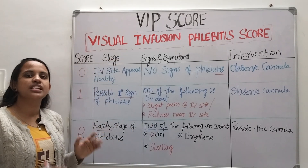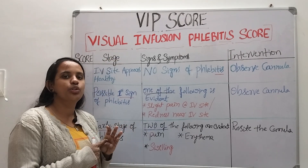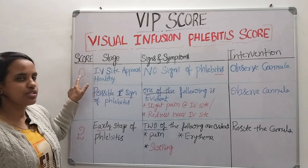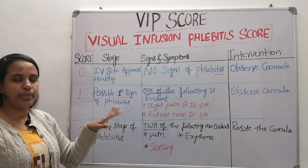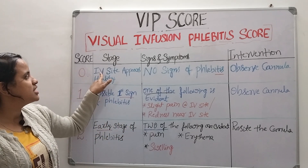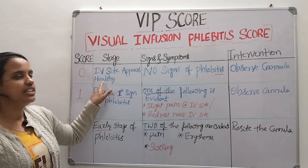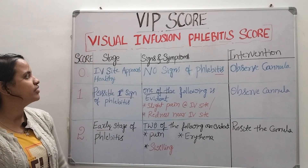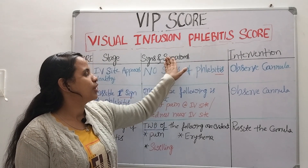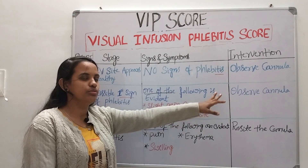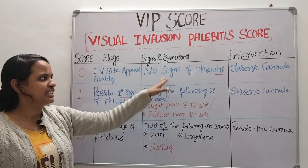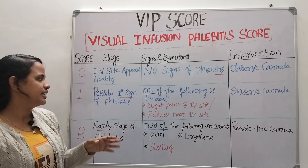In VIP score we have 6 stages — we give scorings from 0 to 5. When we give a score of 0, the IV site appears healthy. There are no signs and symptoms of phlebitis. Our intervention is to observe the cannula, as there is no need to change the cannulation site.